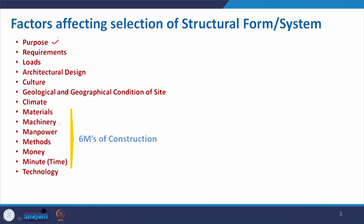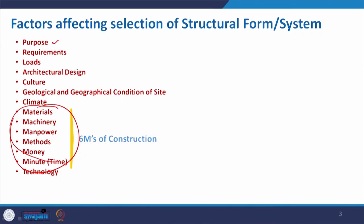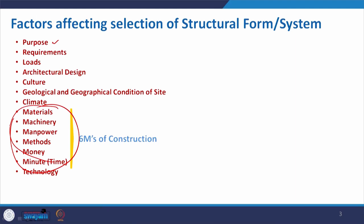One very interesting point is that materials, machinery, manpower, methods, money, and minutes are basically considered as the six Ms of construction management. These are also very important aspects in deciding how we will get the structure built. So let us move to these six Ms of construction.